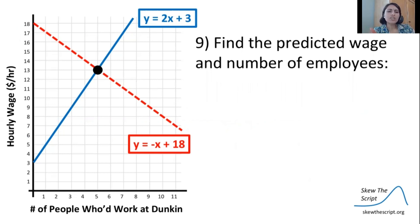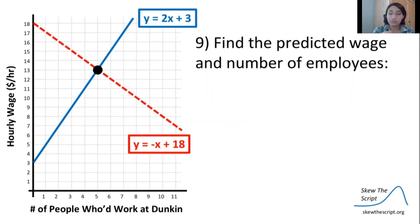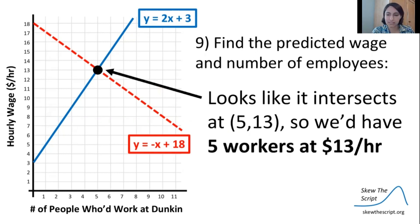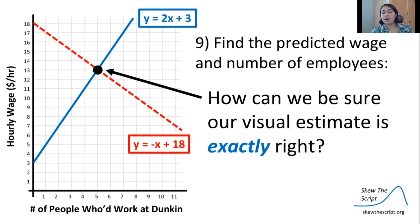Just by looking at our graph, it looks like these lines are intersecting at 5 comma 13 — so five people working at $13 per hour. But we're going to want to go ahead and calculate it mathematically so we can be sure.